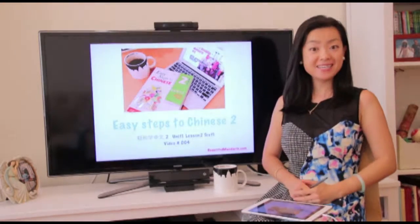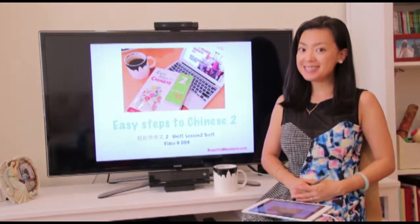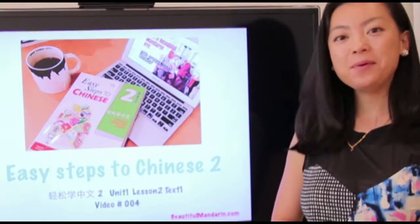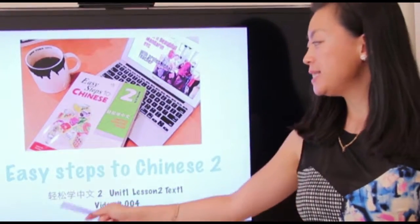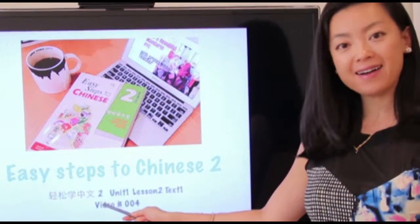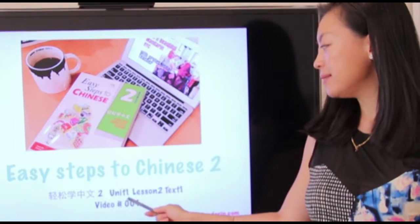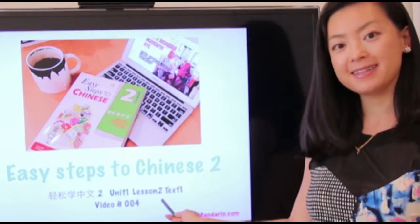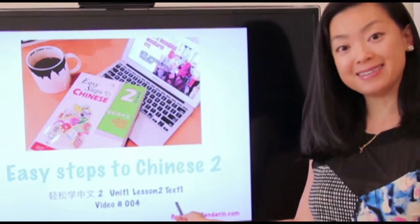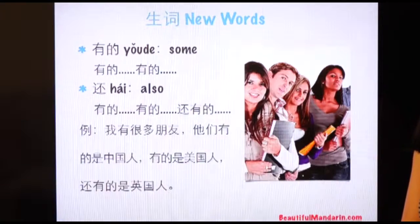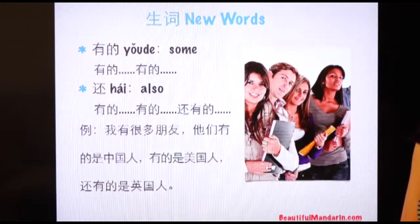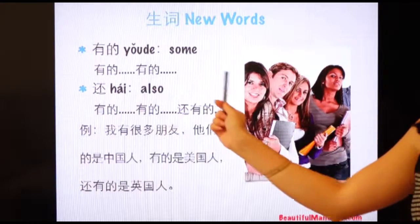Hi, you guys. I'm very happy to meet you again. I'm Cece. Today, we're going to talk about Easy Steps to Chinese 2 — 轻松学中文二的第一单元的第二课的第一篇课文. Before we start to learn 生词, I want to tell you that in this video, we're going to learn a new pattern, which is 有的...有的.